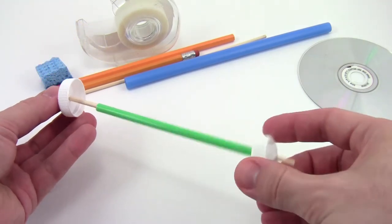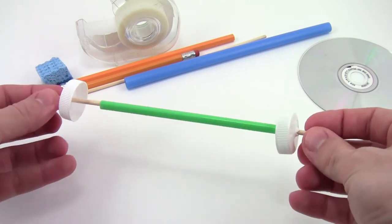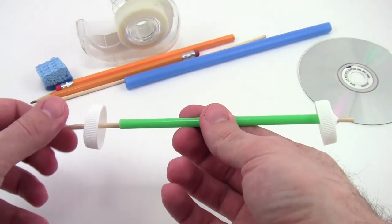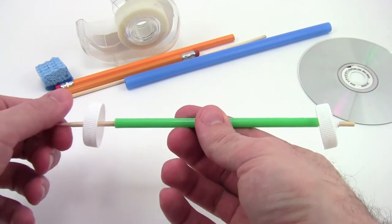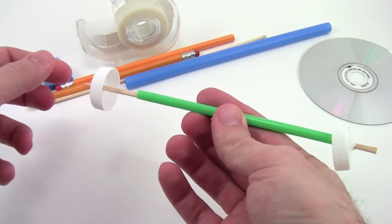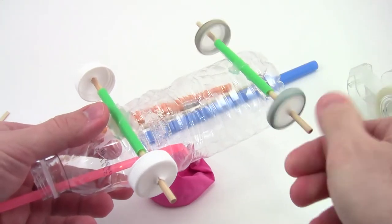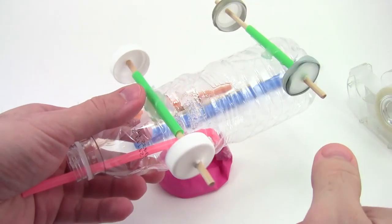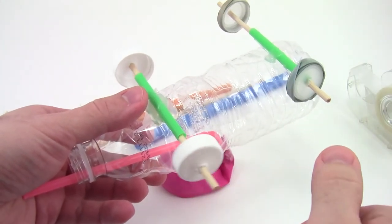If necessary, use tape or glue to secure the bottle caps to the skewer and then attach the straw to the body of your car like a piece of cardboard or a plastic bottle. You can see I've done that here for the wheels on this balloon car. Make sure the axles can spin freely without getting stuck.